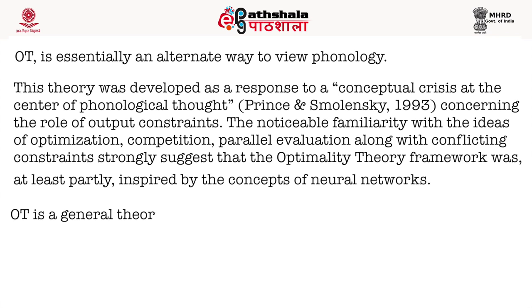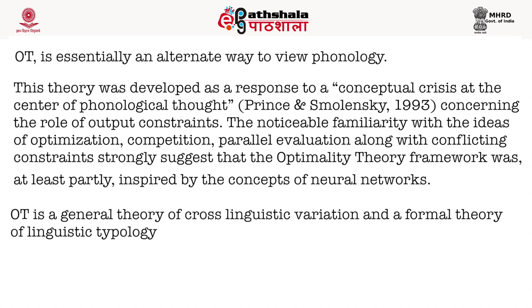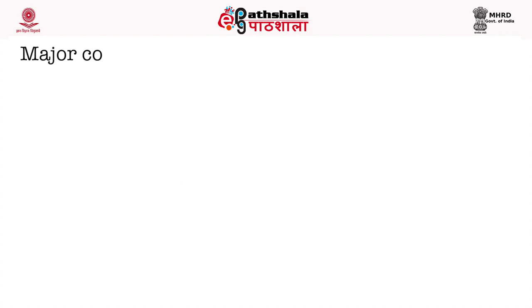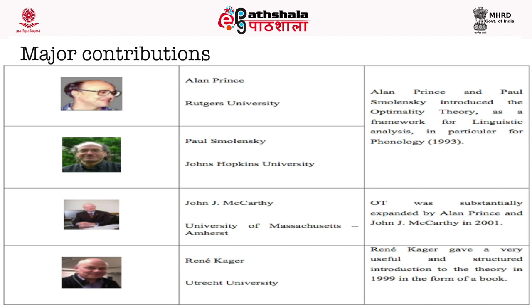OT is a general theory of cross-linguistic variation and a formal theory of linguistic typology. Alan Prince of Rutgers University and Paul Smolenski of Johns Hopkins University, both in USA, started introducing their studies on a new approach to language. This new approach was named optimality theory by 1993 and became quite well known by Prince and Smolenski's widely circulated manuscript, 'Optimality Theory: Constraint Interaction and Generative Grammar.'